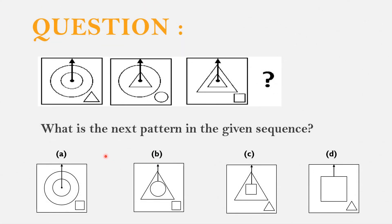Question. Which among the following options A, B, C and D is the next pattern in the given sequence?